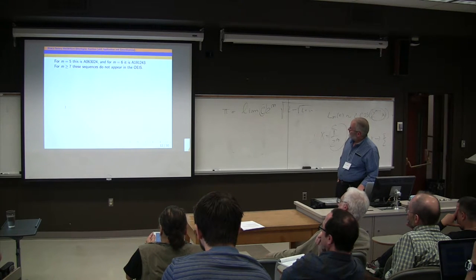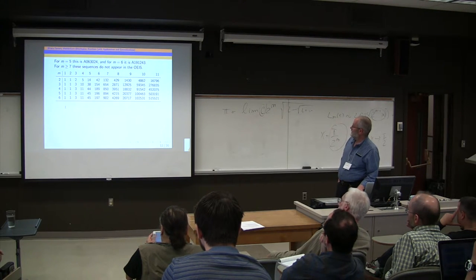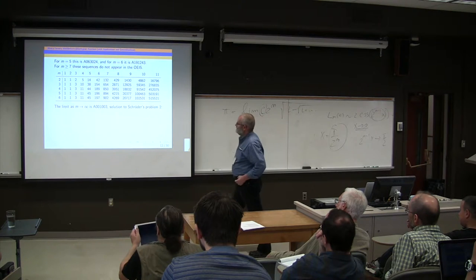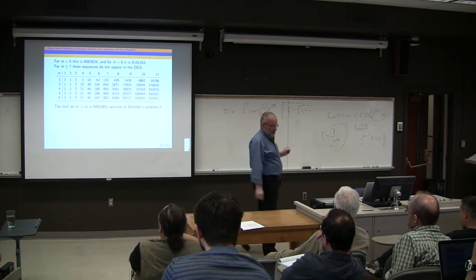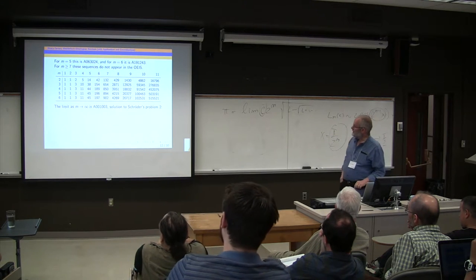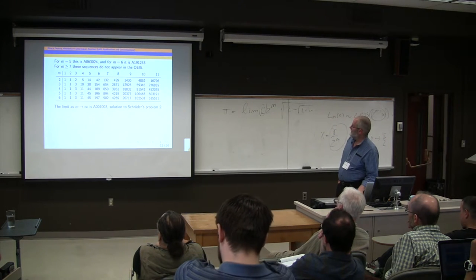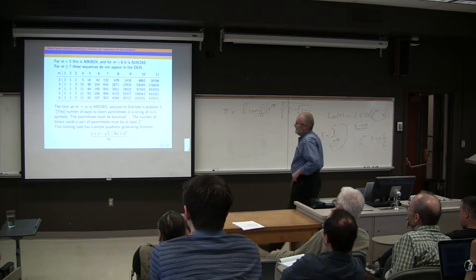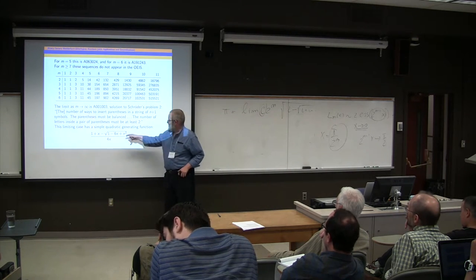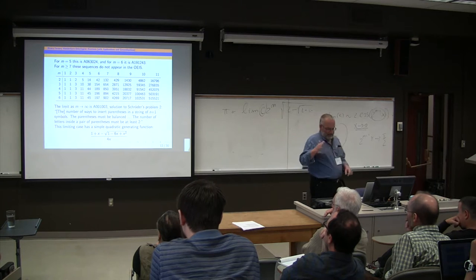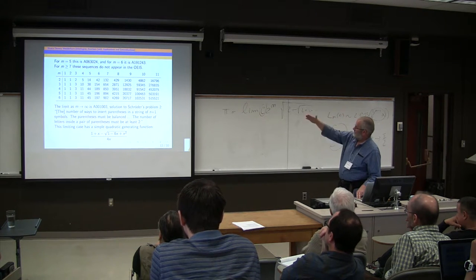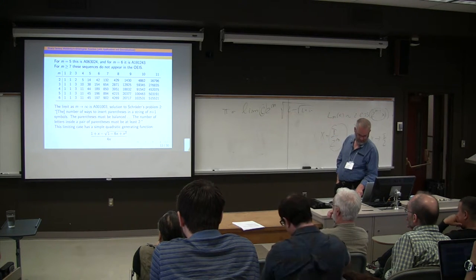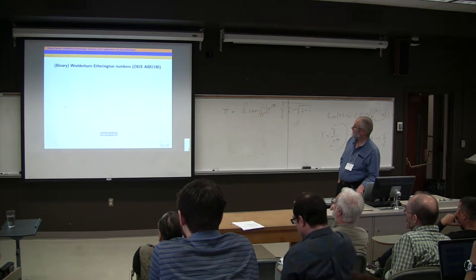And they're the coefficients of that series reversion. For m bigger than or equal to 7, these are not in the encyclopedia, so I should probably put them there. However, the limit as m tends to infinity here, where you allow operations of all arities, or internal nodes of any degrees, is the solution to Schröder's problem 2. And this has a very pretty generating function, this quadratic irrational generating function. The irrationality depends on m for finite m, but in the limit it collapses to something quadratic, which is very nice.